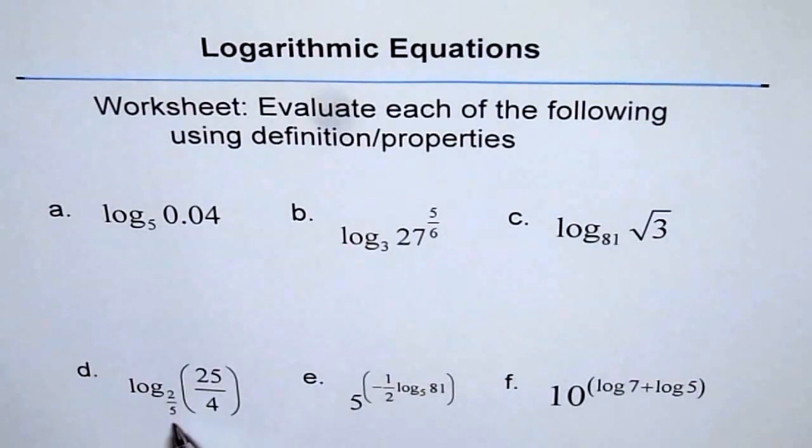And then we have log of 2 to the power of 2 over 5 of 25 over 4, and then 5 to the exponent of minus half log 5, 81, and 10 to the power of log 7 plus log 5.